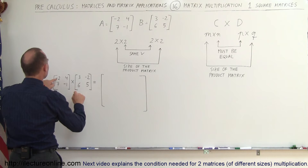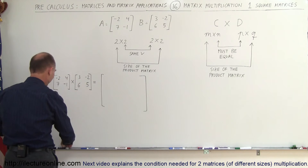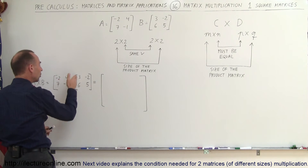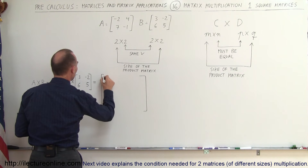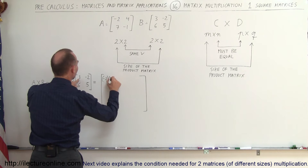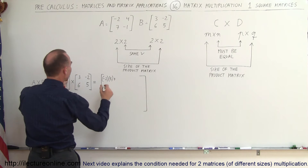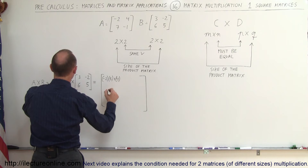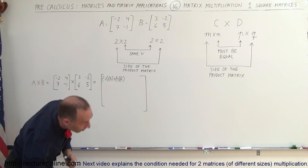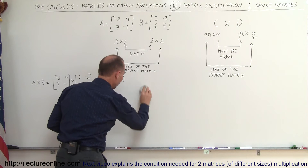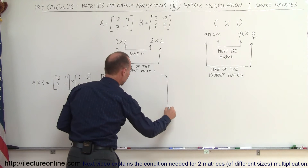So the first element C11 is simply negative 2 times 3 plus 4 times 6 — we move to the left on the first row and down on the first column. So this would be negative 2 multiplied times 3, plus 4 multiplied times 6.